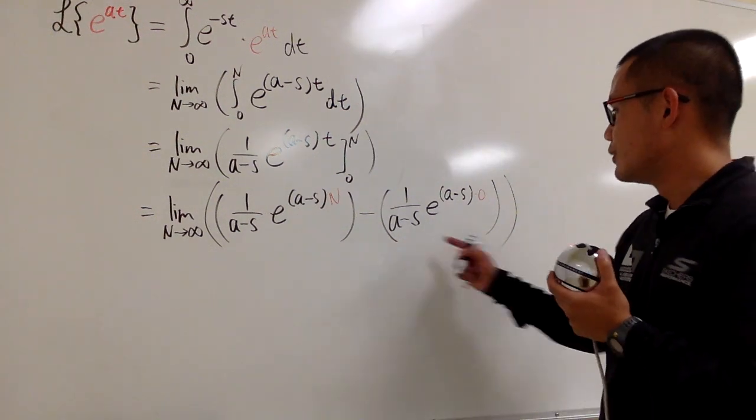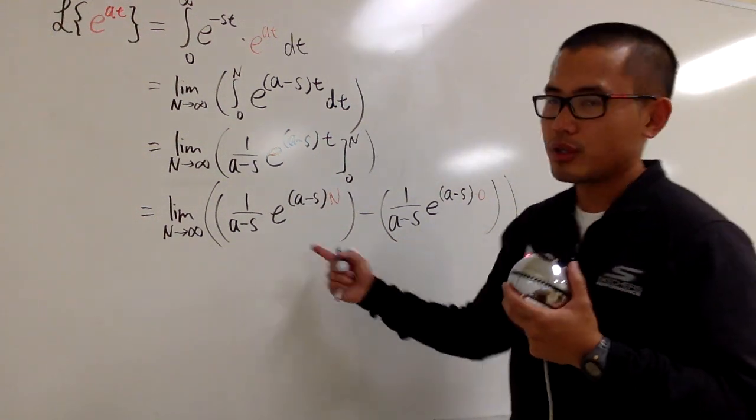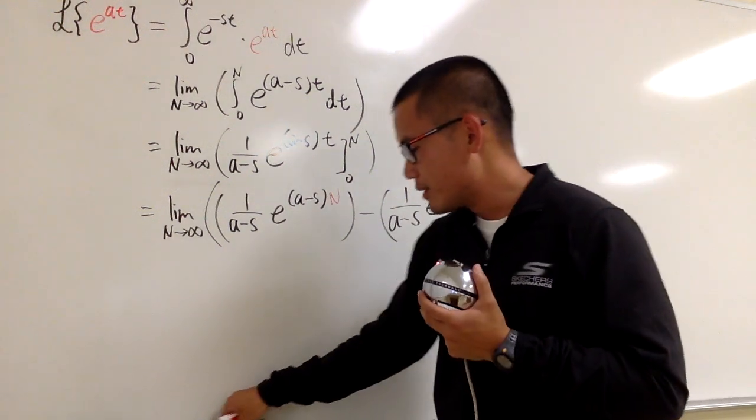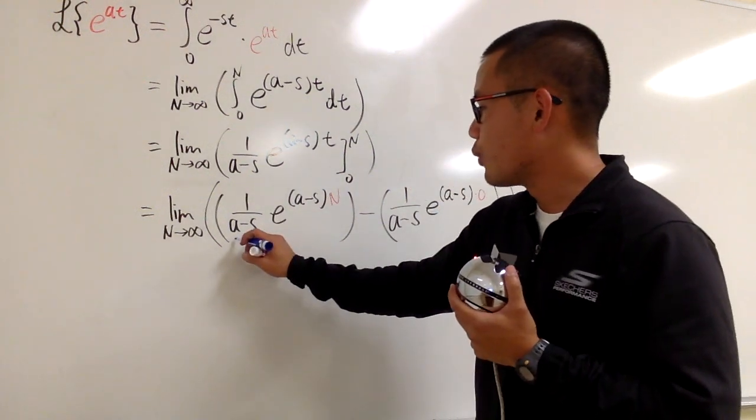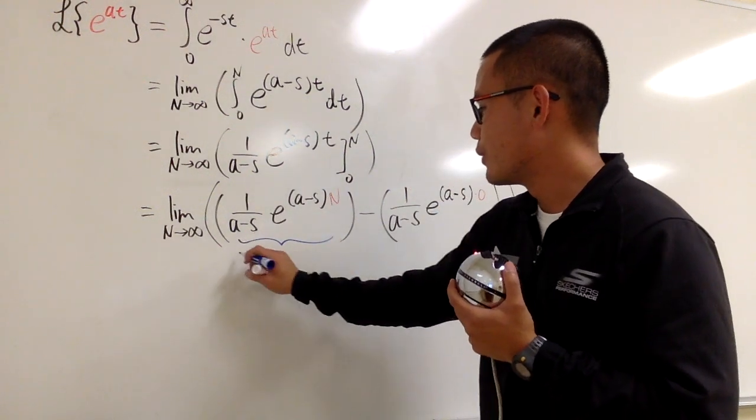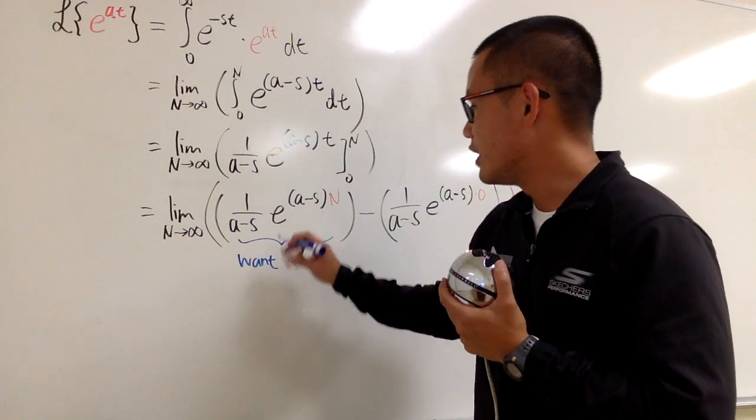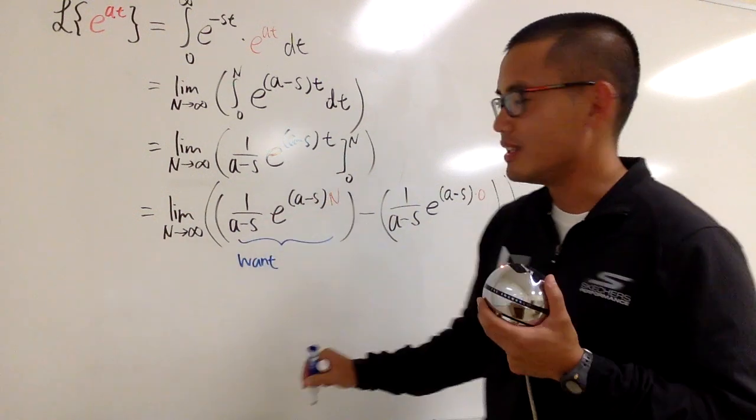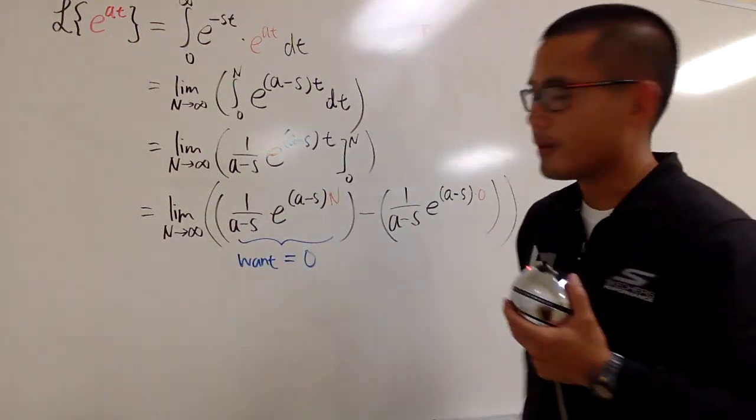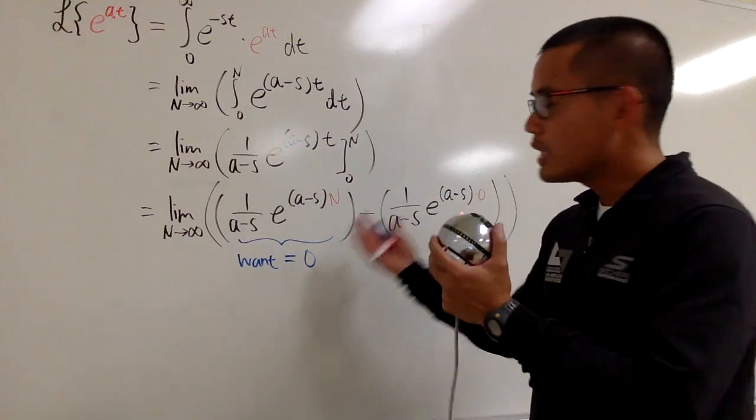So you know this is the easy part. This is the part that you have to kind of just talk about. Now do it carefully. What do we want from here? We want this part. Whenever e to the something and n goes to infinity, we want this part to be 0. How can we make this happen?